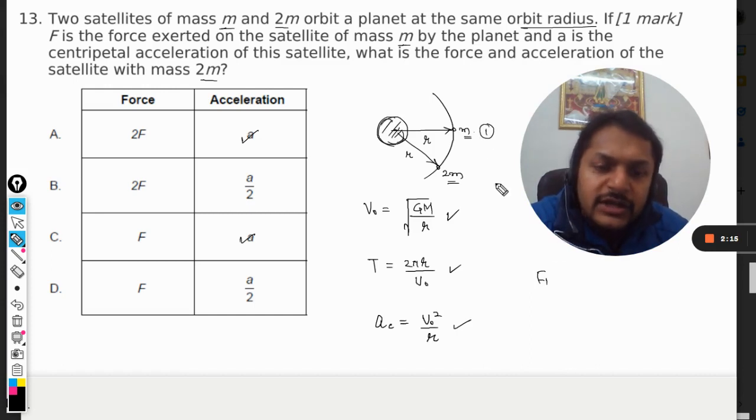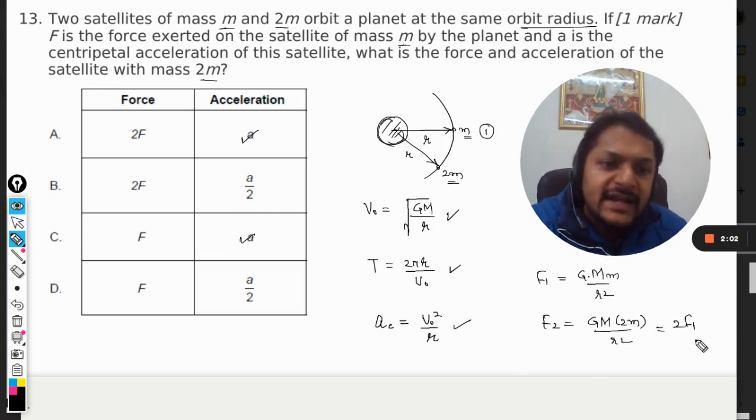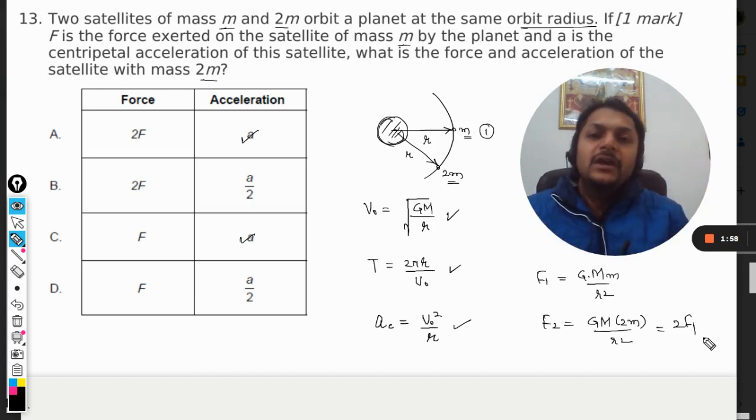This is the first body. So what is force on this? F₁ = GMm/r². And what is the force on the second body? Now that is F₂ = GM(2m)/r². So you can clearly see that it is double of F₁. It means that yes, there is a difference that mass is making.